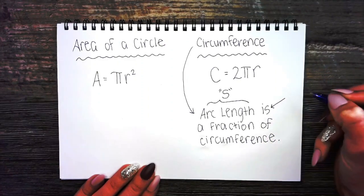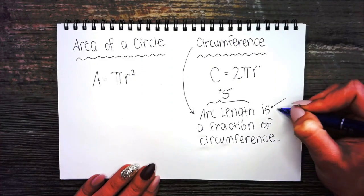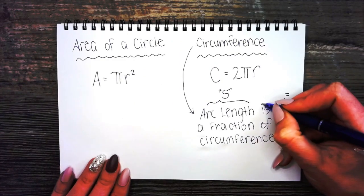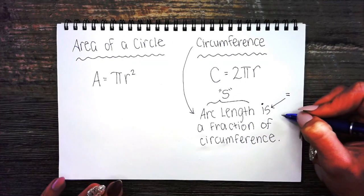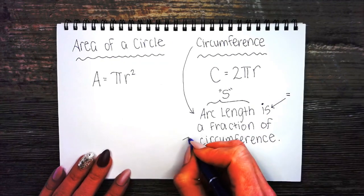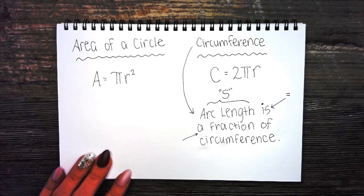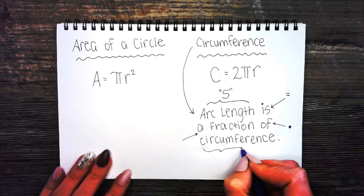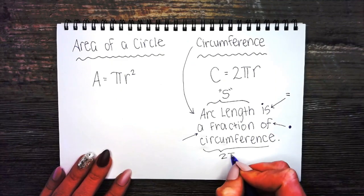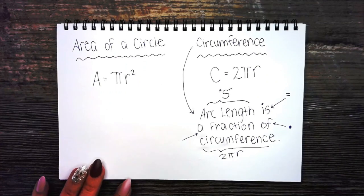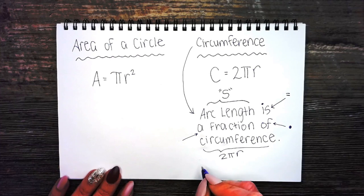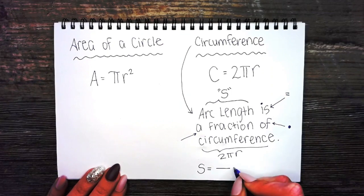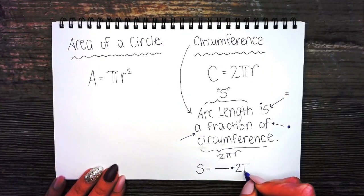A fraction is literally a fraction. Of means multiply and circumference is 2 pi r. If we had to write a formula for arc length, it would be s equals fraction of 2 pi r.